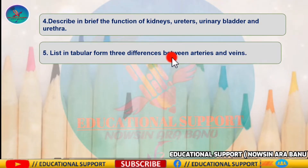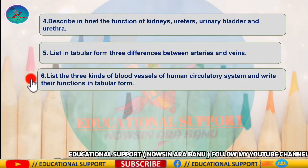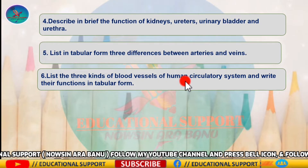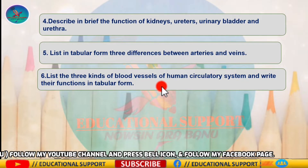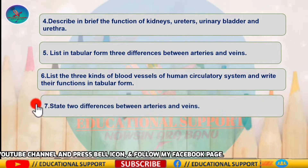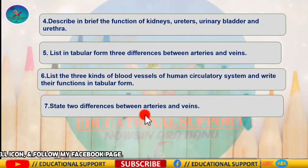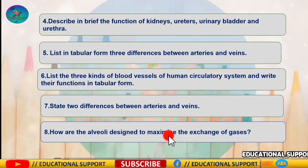Question five: list in tabular form three differences between arteries and veins. Question six: list the three kinds of blood vessels of the human circulatory system and write their functions in tabular form. Question seven: state two differences between arteries and veins. Question eight: how are the alveoli designed to maximize the exchange of gases?